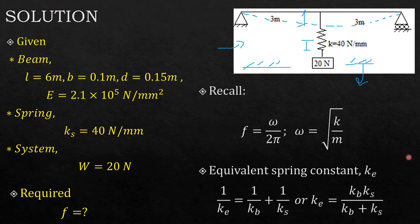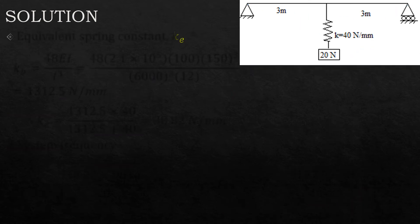Equivalent spring constant I've already given that, and how to rearrange it to make k_e the subject. So let's move ahead and get the equivalent stiffness constant k_e. If you are to get k1 and k2, k_beam and k_spring, how do you get the k for the beam?